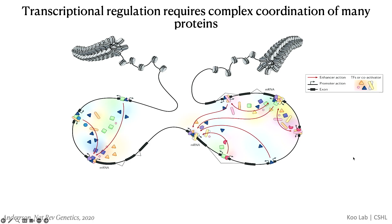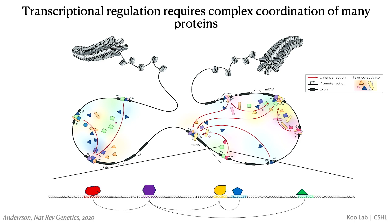Transcription regulation requires the complex coordination of many proteins. This simplified diagram shows proteins interacting with DNA at cis-regulatory elements, also referred to as CREs, such as enhancers and promoters. Within a CRE, short sequence elements called motifs coordinate the binding of transcription factors to regulate gene expression. The rules governing this coordination are known as the cis-regulatory code. Decoding this complex language of the regulatory genome is a major goal in genomics, and understanding the regulatory code is crucial for many downstream applications, including designing synthetic sequences with desirable properties.